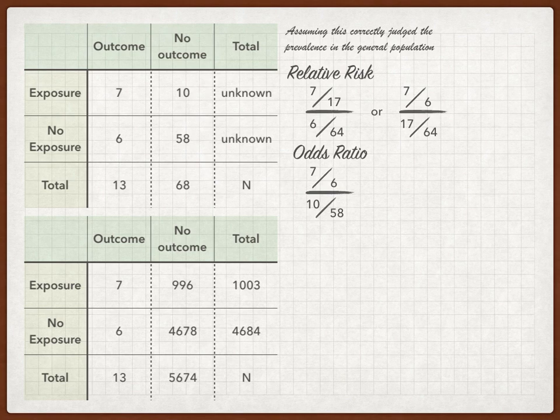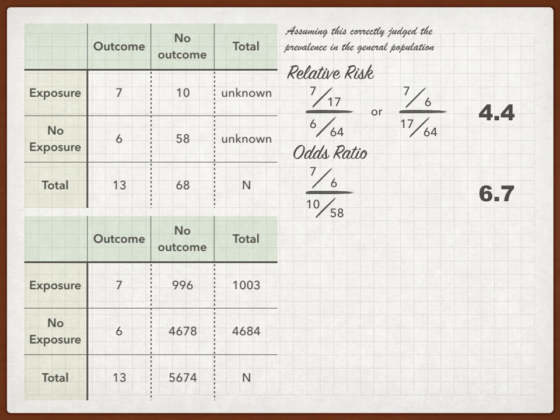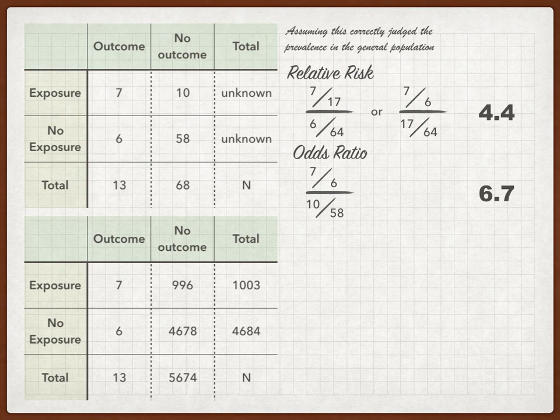Assuming this is actually a representative population, we can calculate a relative risk for comparison: 7 plus 10 gives 17 as the total exposed, yielding a relative risk of 4.4, and an odds ratio of 6.7. The odds ratio is greater — pretty typical. But they both travel in the same direction, so even if you don't know the relative risk, you can tell there is a positive correlation between the exposure and the outcome.